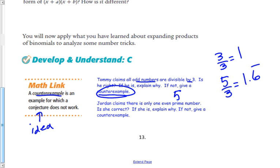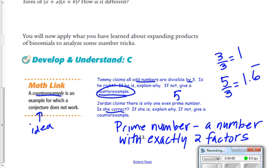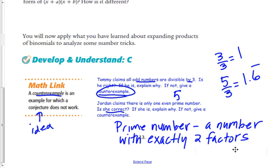Now in the second problem here, it says Jordan claims there's only one even prime number. Is she correct? If she is, explain why. Now remember that a prime number is any number that has exactly two factors and those factors are one and itself.